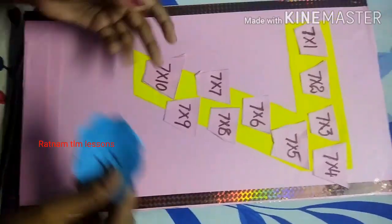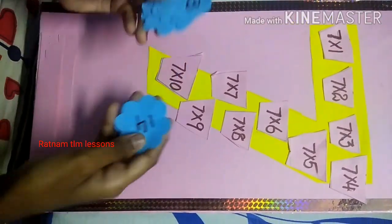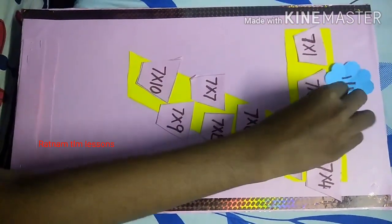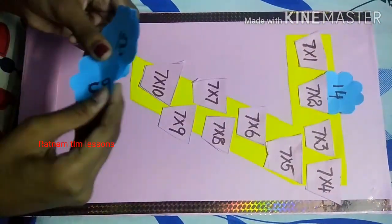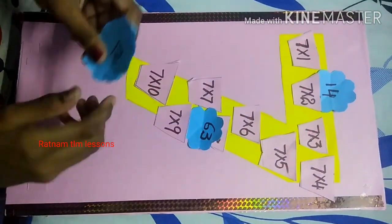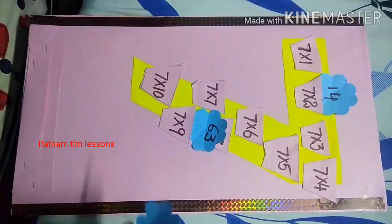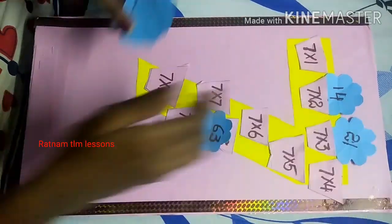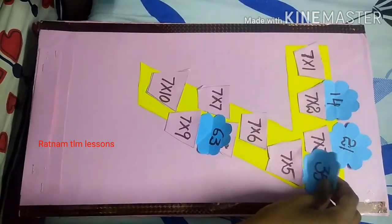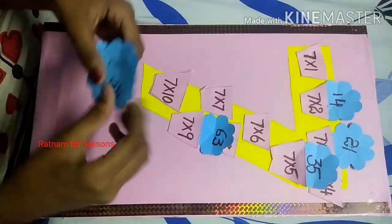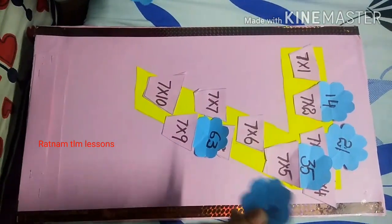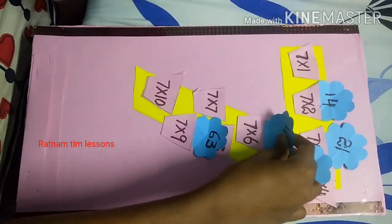7th table. 7 2's are 14, 7 9's are 63, 7 3's are 21, 7 5's are 35, 7 8's are 46, 7 6's are 42.